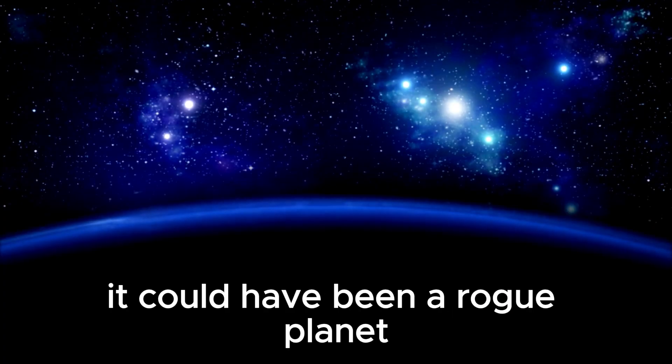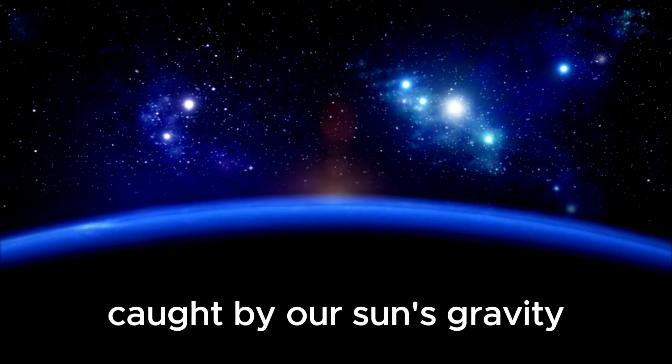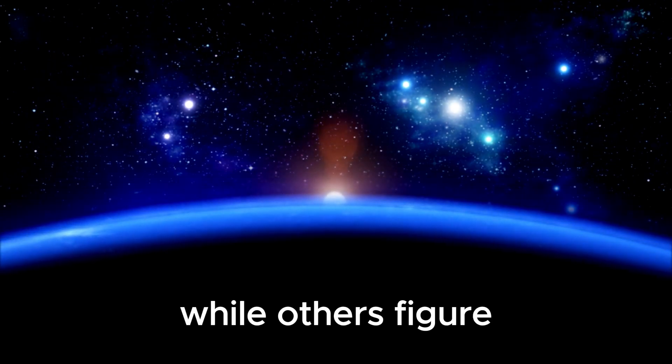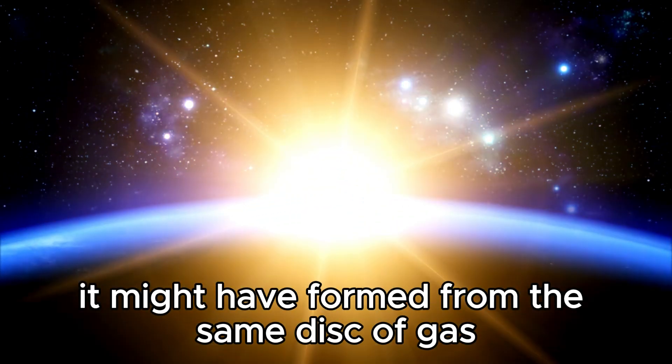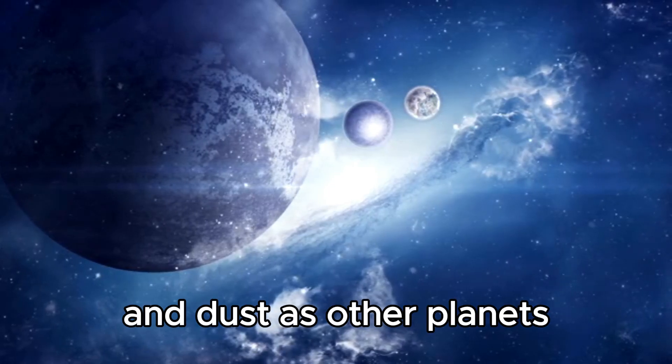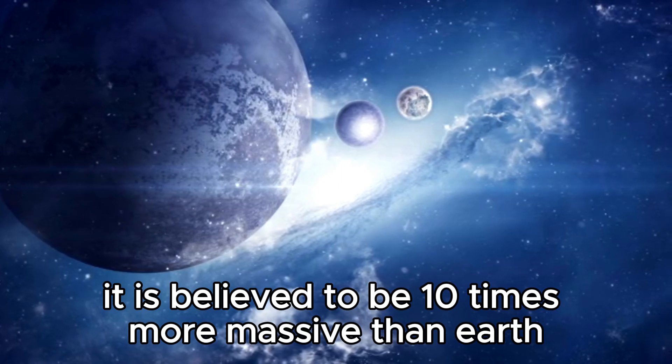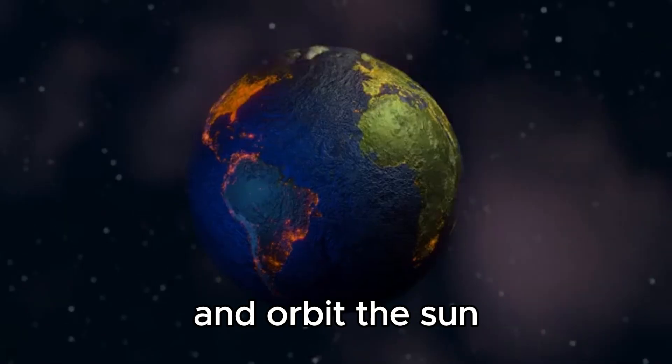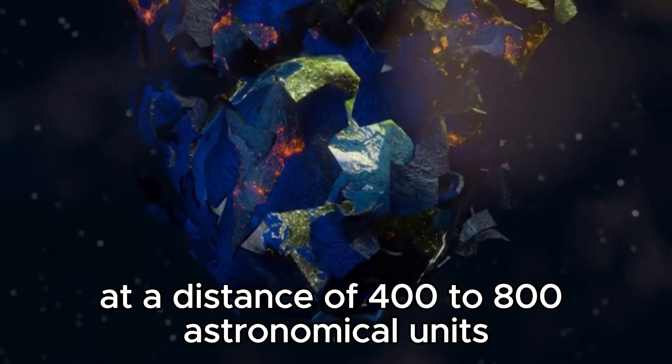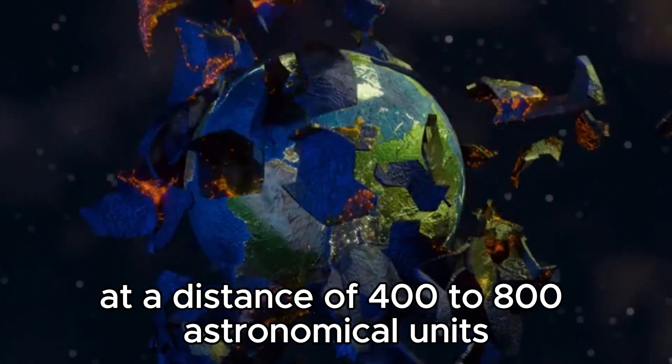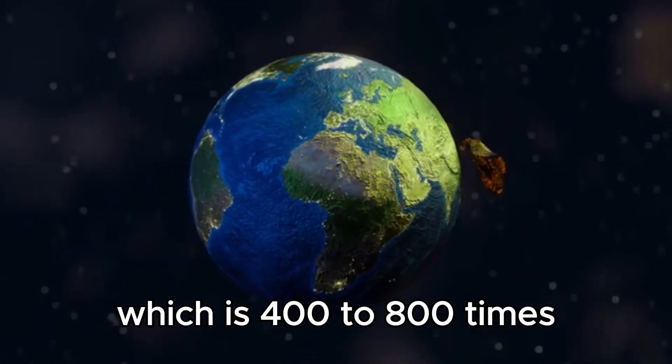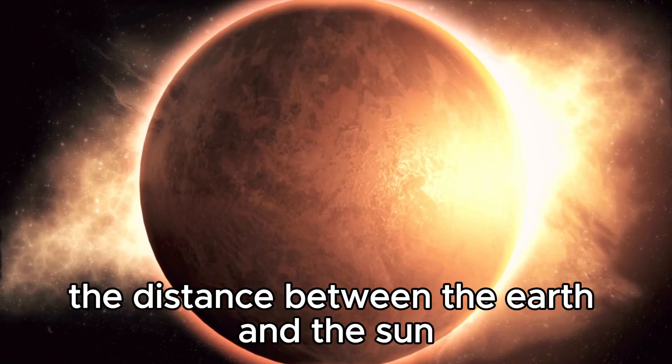Some research suggests it could have been a rogue planet caught by our sun's gravity, while others figure it might have formed from the same disk of gas and dust as other planets. If Planet 9 exists, it is believed to be ten times more massive than Earth and orbit the sun at a distance of 400 to 800 astronomical units, which is 400 to 800 times the distance between the Earth and the sun.